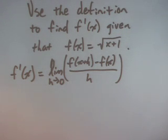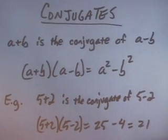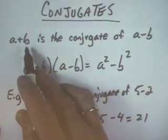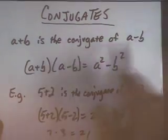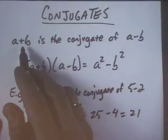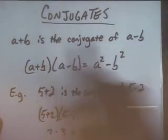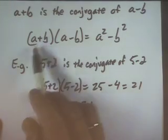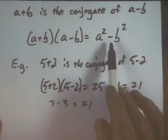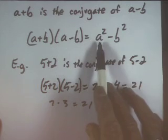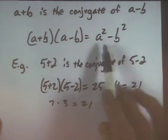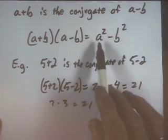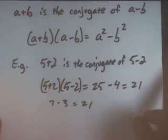Before we do that, I want to mention a very special product, and that is the product of two conjugates. a plus b is the conjugate of a minus b. In other words, when we have two numbers and we have their sum and then their difference, we call those conjugates of one another. When you multiply two conjugates — when we take a plus b and multiply by a minus b — we get a difference of squares: a squared minus b squared. So notice that both terms, a and b, are being squared and we're finding their difference.